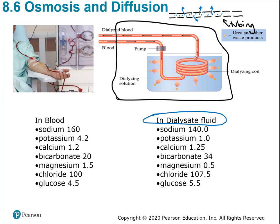The dialysis fluid is not just water — it's really an isotonic solution, meaning equal solutes. It contains what should be in the blood if the blood is properly filtered. For example, sodium at about 140 milliequivalents per deciliter, potassium, calcium, bicarb, magnesium, chloride, and even glucose at 5.5 — the correct concentration of nutrients in the blood.